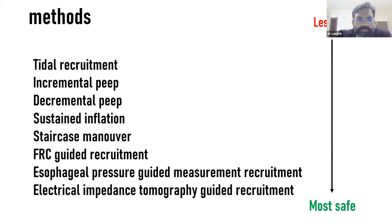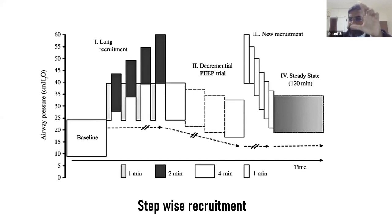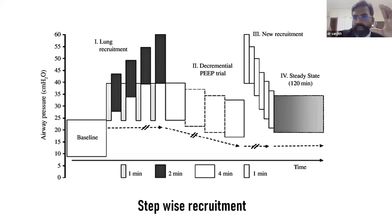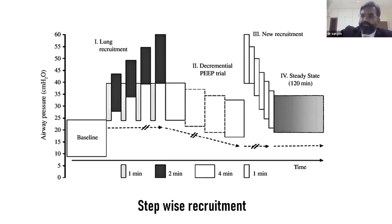The staircase maneuver: keep driving pressure (plateau pressure minus PEEP) constant at ~15 cmH₂O throughout. Begin in pressure control mode with PEEP 5 and pressure control 20. Increase PEEP by 4 every 1–2 minutes (so PEEP goes 5→9→13...) while increasing pressure control proportionally, maintaining driving pressure at 15. Continue until SpO₂ rises by ≥3% or ultrasound confirms recruitment.